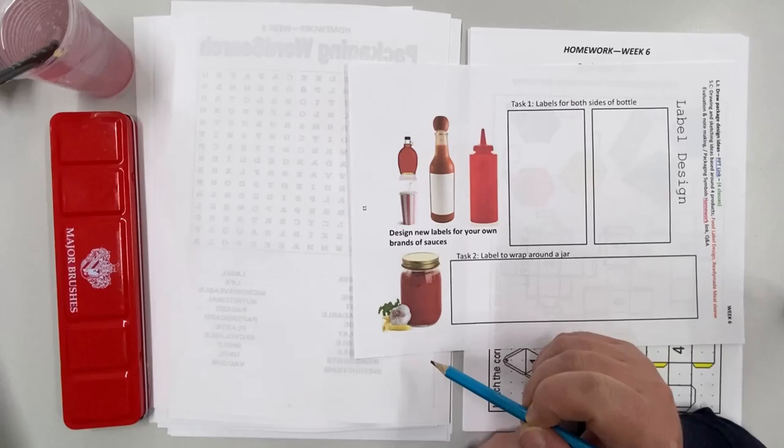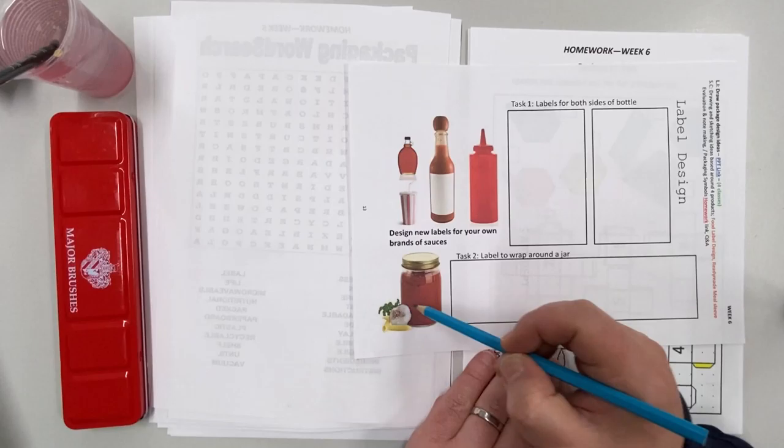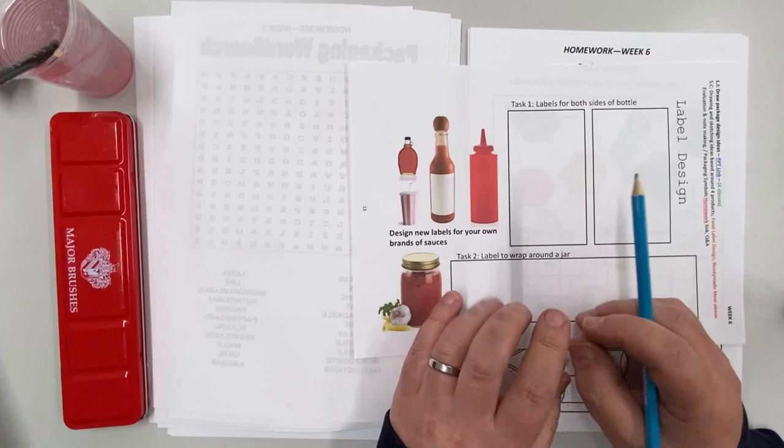So what I want you to do is I want you to design a label that would wrap the whole way around the jar, so it might include the pictures of the fruit and the vegetables that are in the sauce.